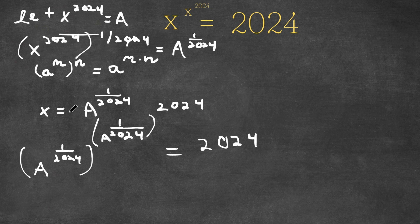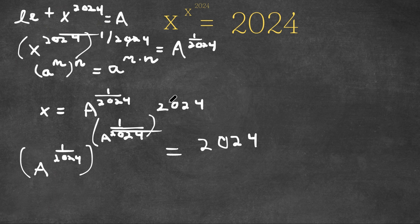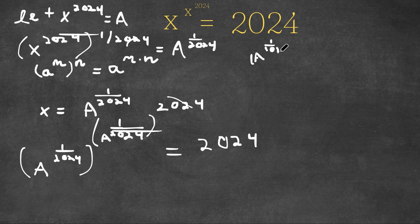Now remember, a to the power of m to the power of n is equal to a to the power of m times n, meaning a to the power of 2024 to the power of 2024 — well, 2024 times 1 over 2024, these two cancel out and it's simply 1. So now we get a to the power of 1 over 2024 to the power of a, is equal to 2024.